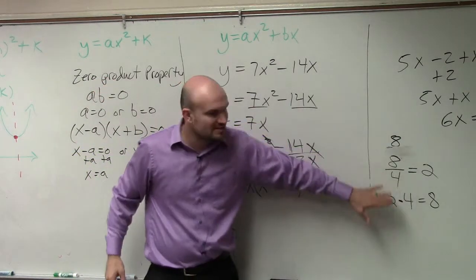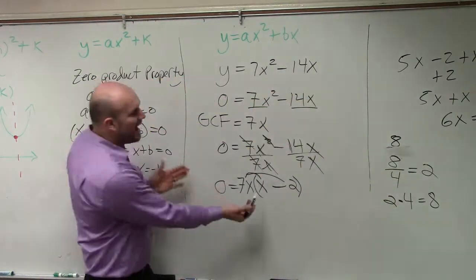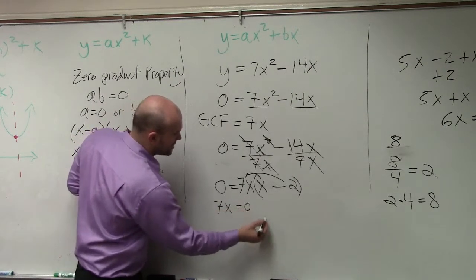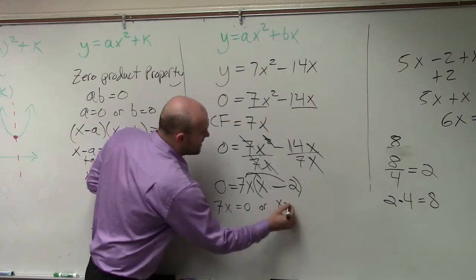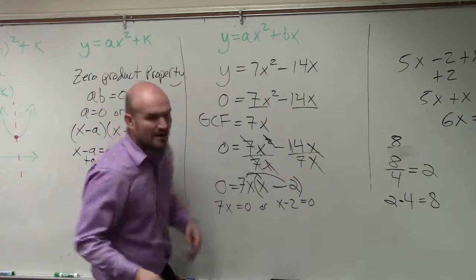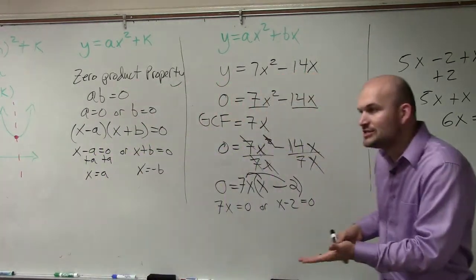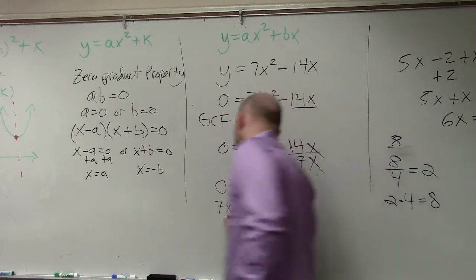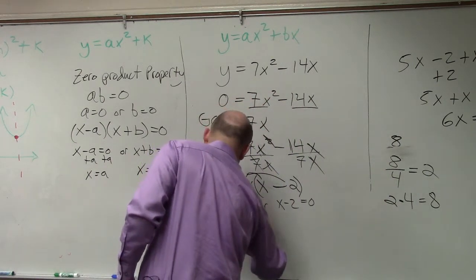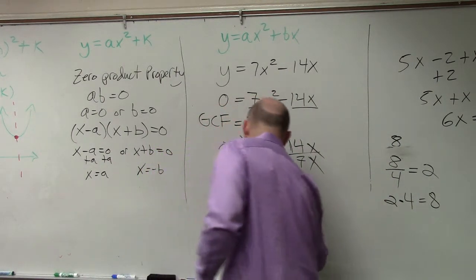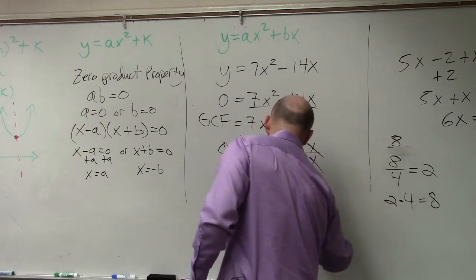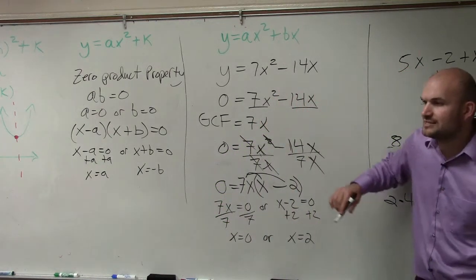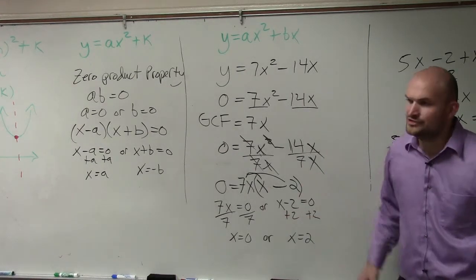Now I can apply the zero product property. I can say 7x has to equal 0, or x minus 2 has to equal 0. Now I have two equations I can solve for x. Divide by 7: x equals 0. Or add 2 to both sides: x equals 2. And now you can see we have two answers.